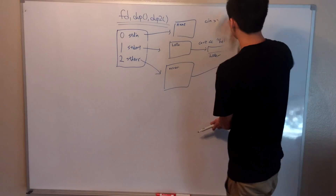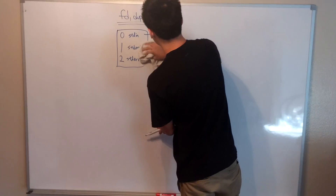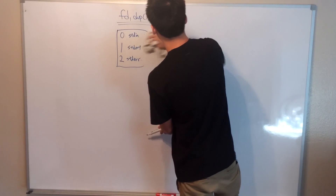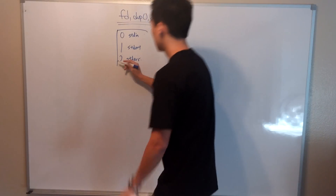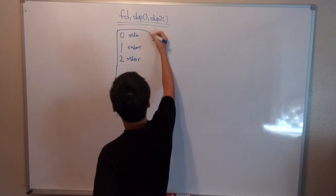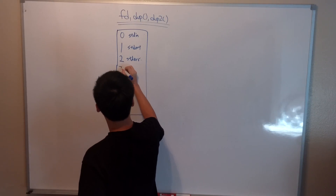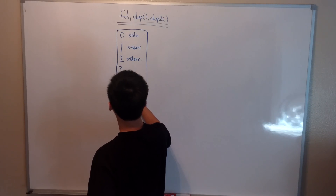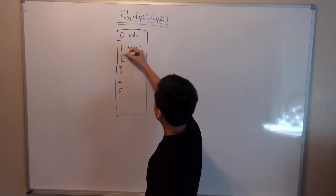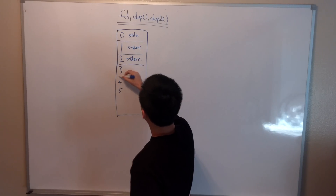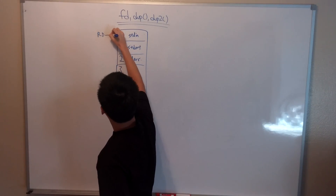So, dup and dup2 are system calls that allow us to change these file descriptors. Let's say we have our standard file descriptors 0, 1, and 2 represented by this box, with more unused file descriptors 3, 4, 5, etc. Now imagine each file descriptor as a slot. The system will always read from 0 and write to either 1 or 2 no matter what files are indicated by each slot.